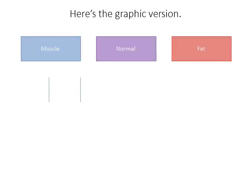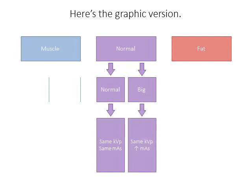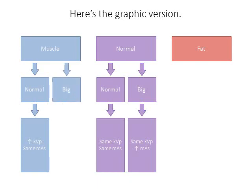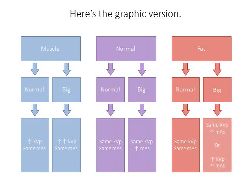Looking at this graphically: a normal patient with normal body habitus — nothing changes. A bigger person with normal fat and muscle distribution — keep the same KVP but increase MAS. A normal-sized patient with high muscle content — increase KVP to penetrate through muscular tissue, cranking it up more as they get bigger. A fat patient of normal size needs approximately the same KVP and MAS, but as they get bigger you keep increasing MAS until you reach a saturation point where a poor image results from the large soft tissue volume — at that point, increase both KVP and MAS.